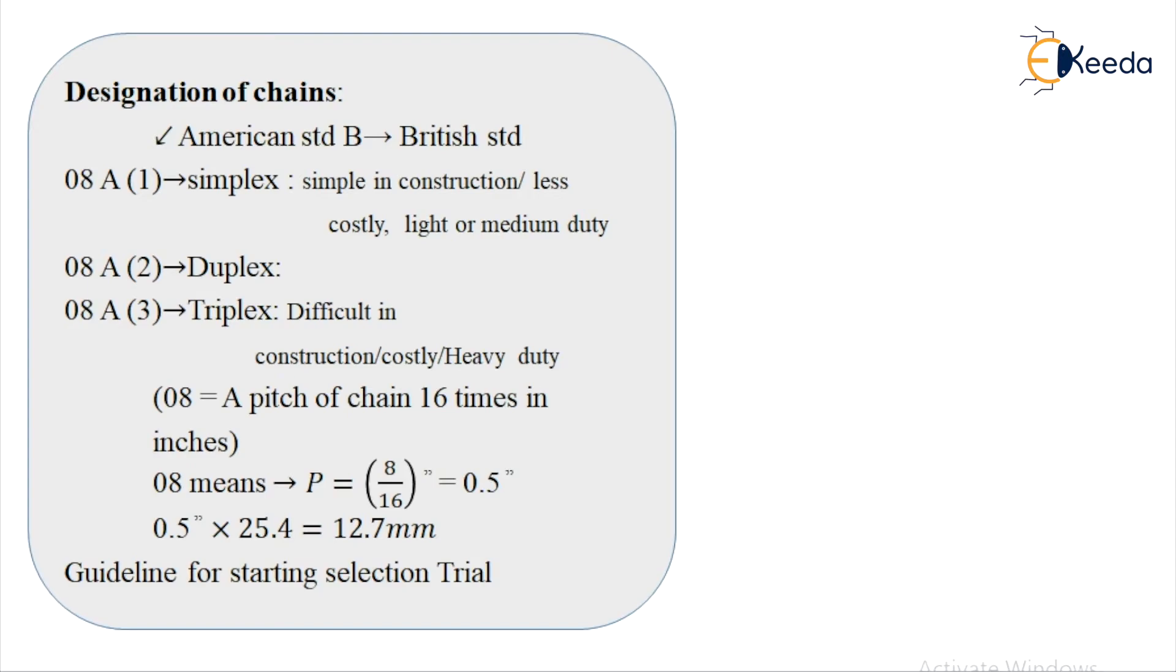As it is said earlier, the number 08 represents a pitch of a chain 16 times in inches. Therefore, you can write down P as 8 upon 16 inch which is 0.5 inch. If we convert it into mm, we can write down 0.5 inch multiplied by 25.4 is equal to 12.7 mm.